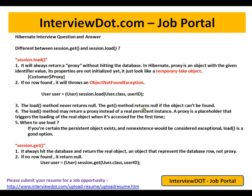The load method never returns null. The get method returns null if the object can't be found. The load method may return a proxy instead of a real persistent instance. A proxy is a placeholder that triggers the loading of the real object when it's accessed for the first time. So after calling load, if you then call user.getName(), at that point it will hit the database and get you the real object — it's essentially lazy loading on demand.